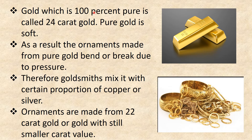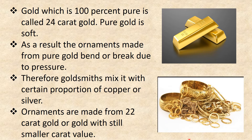Gold which is 100% pure is called 24 carat gold. Pure gold is soft, so ornaments made from pure gold may bend or break due to pressure. Therefore, goldsmiths mix a certain proportion of copper or silver while making ornaments. Ornaments are made from 22 carat gold or gold with a still smaller carat value.